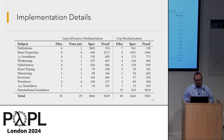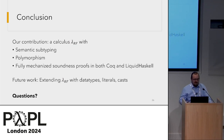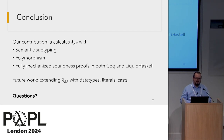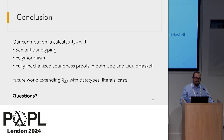In conclusion, we present our calculus Lambda RF. In the future, we'd be interested in extending this with the rest of the GHC primitives, such as data types, literals, and casts. Thank you.